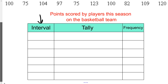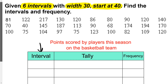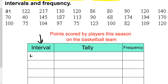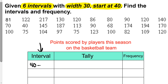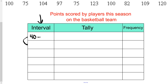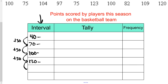My frequency table should have six rows because I want six intervals. With a width of 30 starting at 40, I'm going to be adding 30 each time. So 40 plus 30 is 70, adding another 30 is 100, then 130, then 160, and our last interval starts with adding 30 again, giving us up to 190.